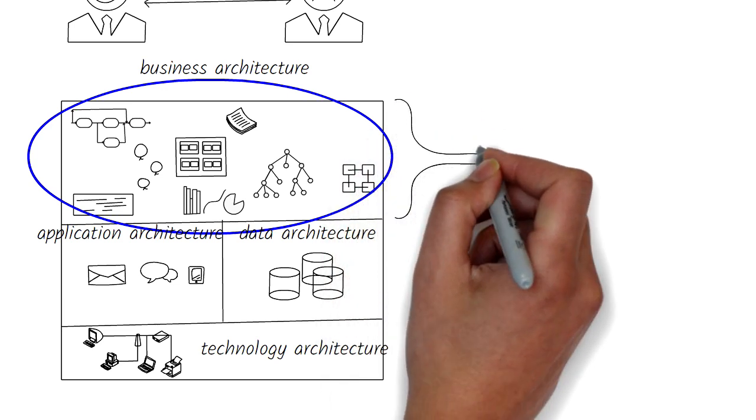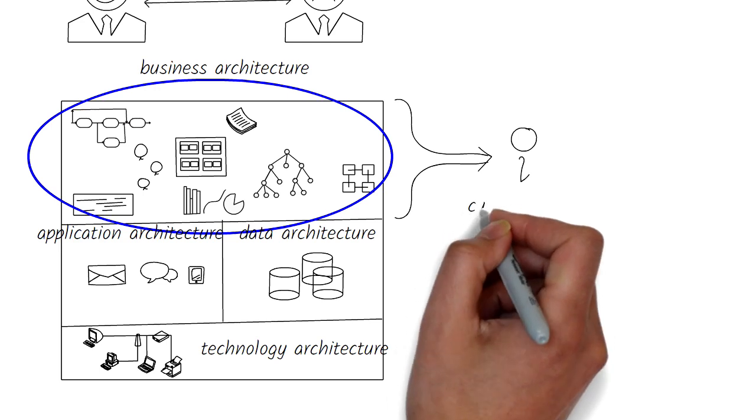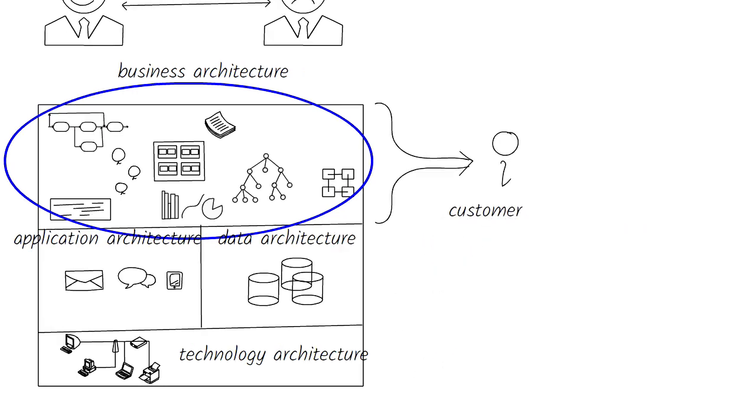The essence of business architecture is very simple. It helps us understand how different parts of the business fit and work together to deliver value to the internal or external customer.